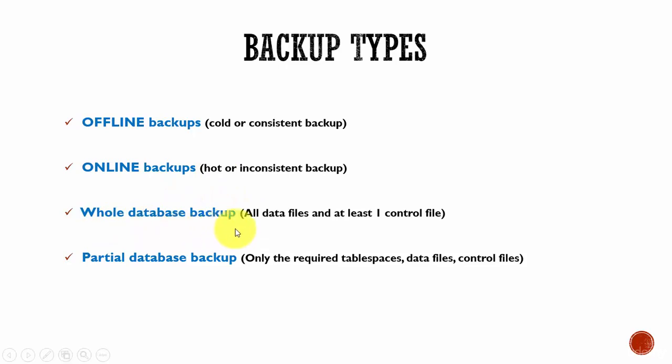The next type is whole database backup. When we perform a whole database backup, it includes all the data files present in the database and at least one control file. Why only at least one control file? Because even though we have multiple control files, the information is the same across all of them. So even if we back up one control file, that is enough to recover the database if needed.